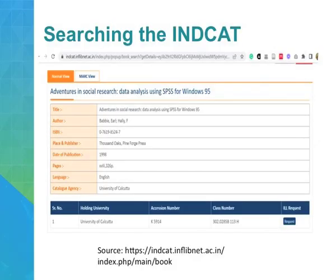IND-CAT provides two views for bibliographic data: one is MARC view and another is normal view. In normal view it will show you the title, author, ISBN number, place and publisher, date of publication, pages, language, and cataloguing agency. At the bottom it will show which library has that particular book and an ILL request button. Once you click the ILL button, it will ask for your details and you can compose a message that is sent directly to the concerned university contact person. This is how interlibrary loan can become a reality using IND-CAT.